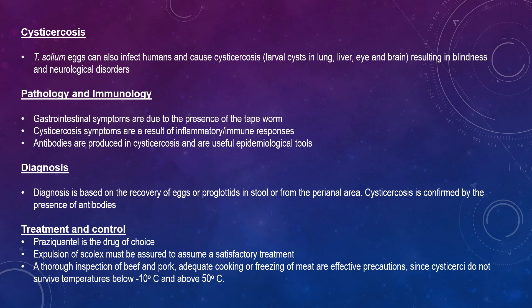Gastrointestinal symptoms occur due to the presence of the tapeworm. When you have cysticercosis symptoms, these are a result of inflammatory immune responses. Antibodies are produced and are useful epidemiological tools. Diagnosis is based on the recovery of eggs or proglottids isolated from the perianal area, confirmed by the presence of antibodies.